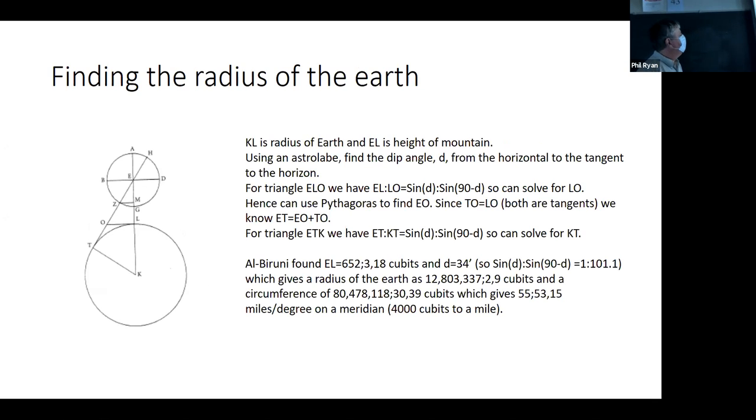So how do you find the radius of the earth? So what you do is you go up to the top of the mountain. And so KL is going to be the radius of the earth. EL is going to be the height of the mountain. So this is, of course, not drawn to scale. You're on top of the mountain, and you've got like an astrolabe, which is one of those instruments that you kind of shoot,